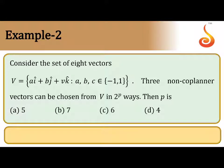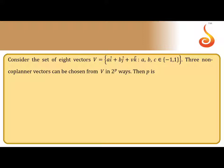The set of eight vectors v equal to ai plus bj plus ck, where a, b, c are given. The three non-coplanar vectors can be chosen from v in 2^p ways. Then the p-value they are asking. So let us find what are the eight vectors.